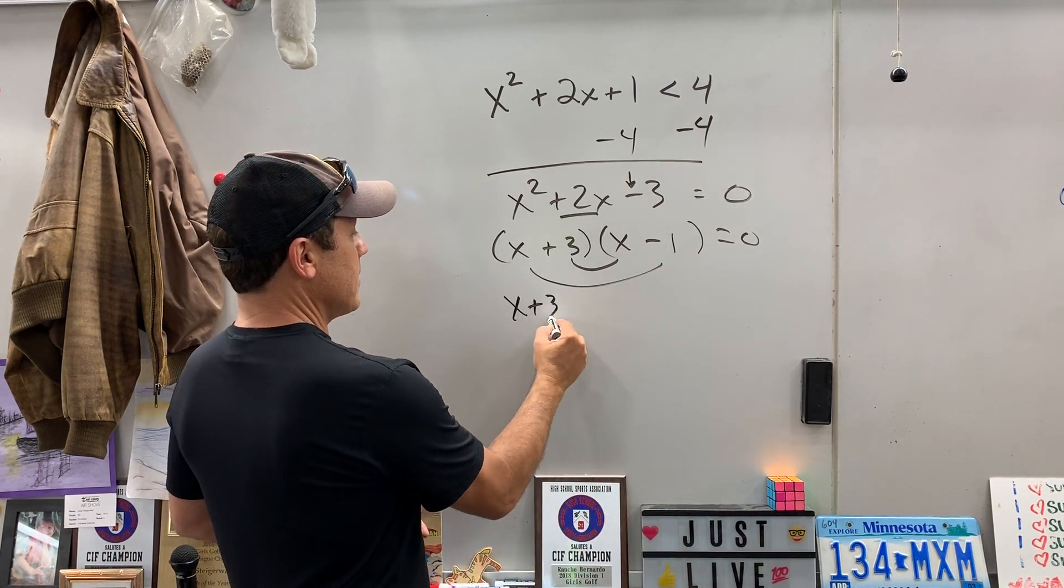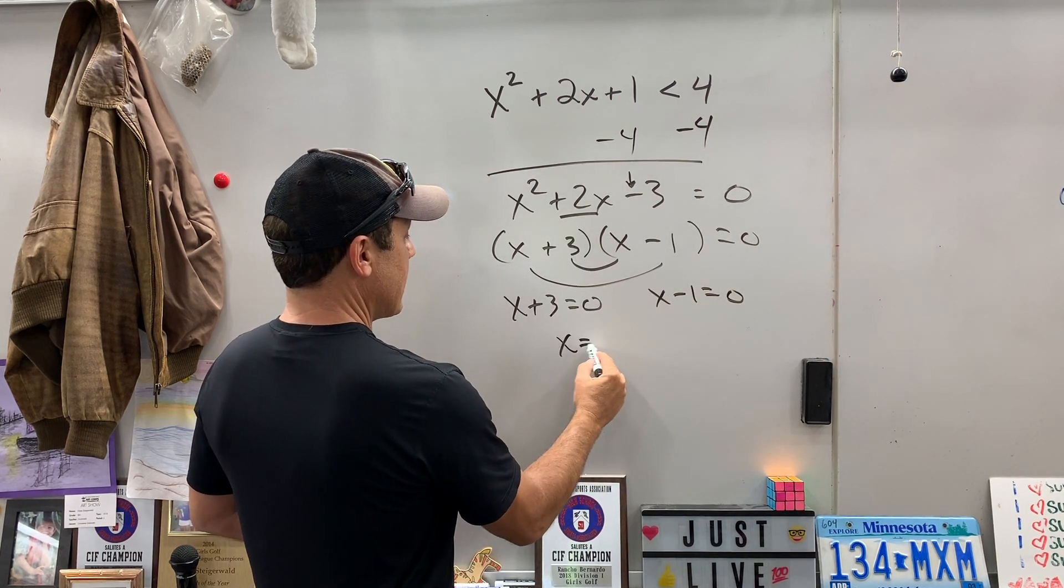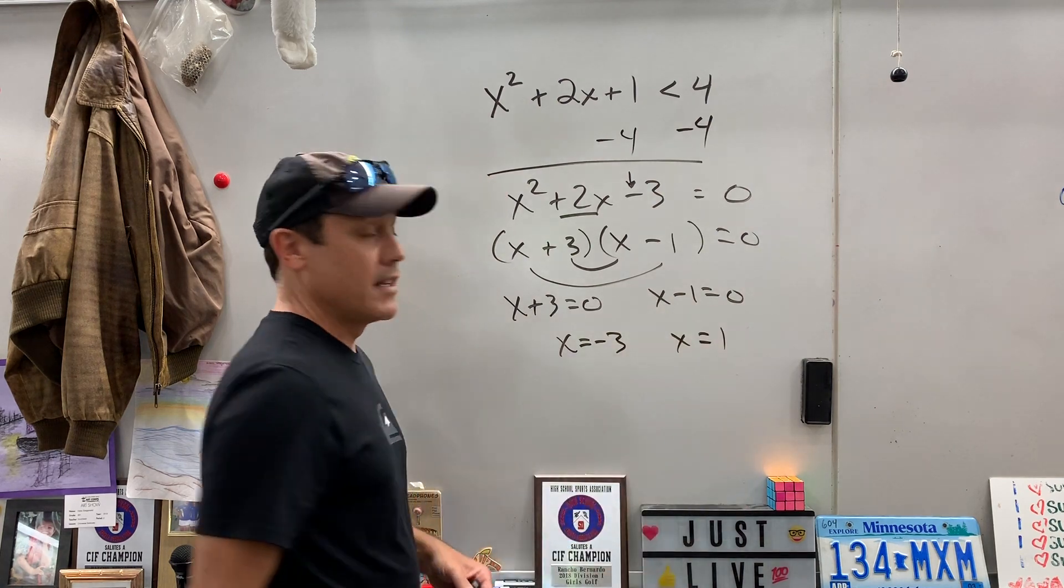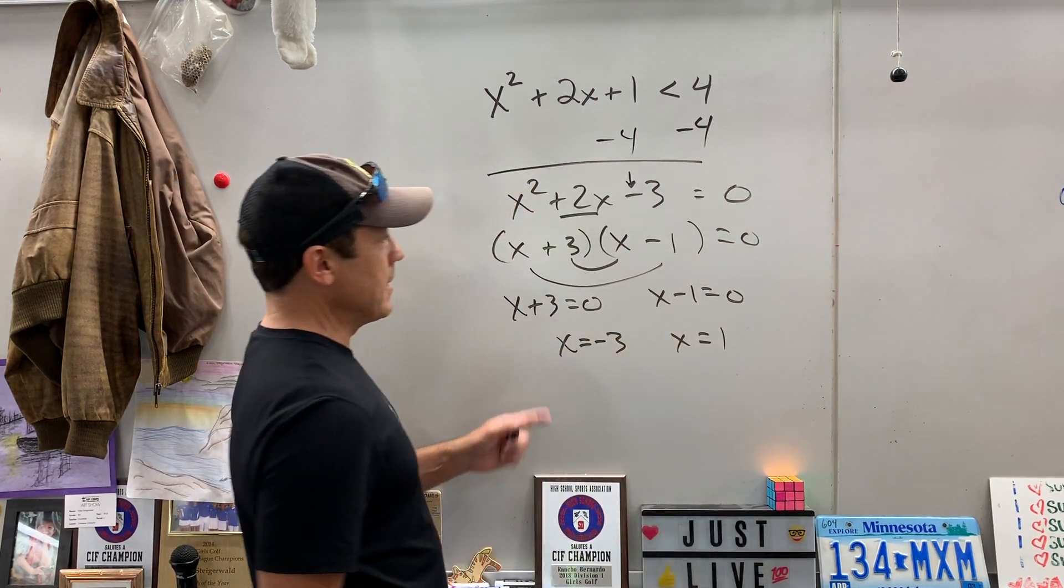Okay, so again, pick each of these factors up, set it equal to zero. x equals negative three, x equals one. Okay, so I'm going to leave that there. I'm going to erase because now we need a number line.